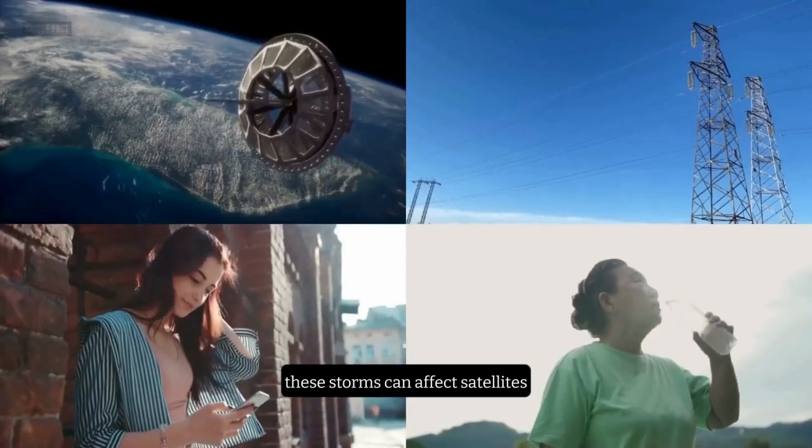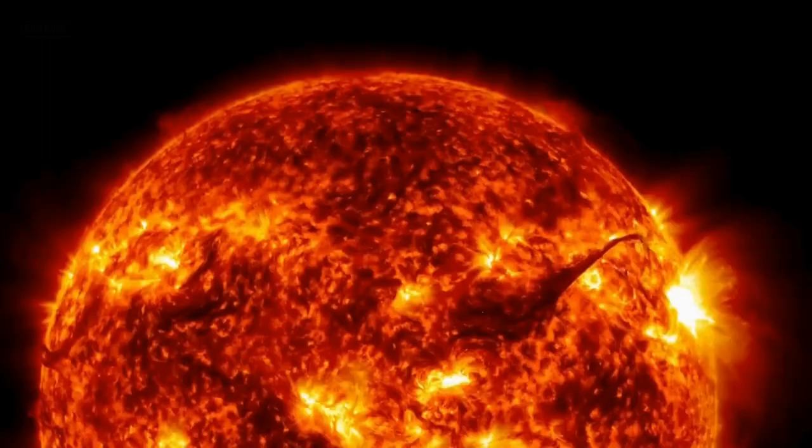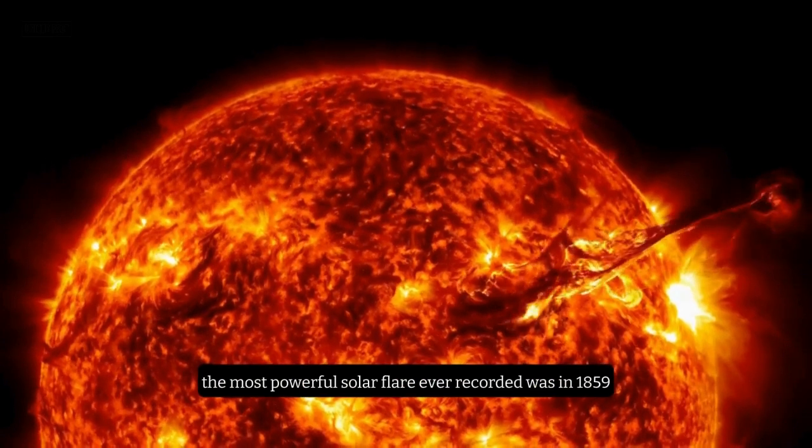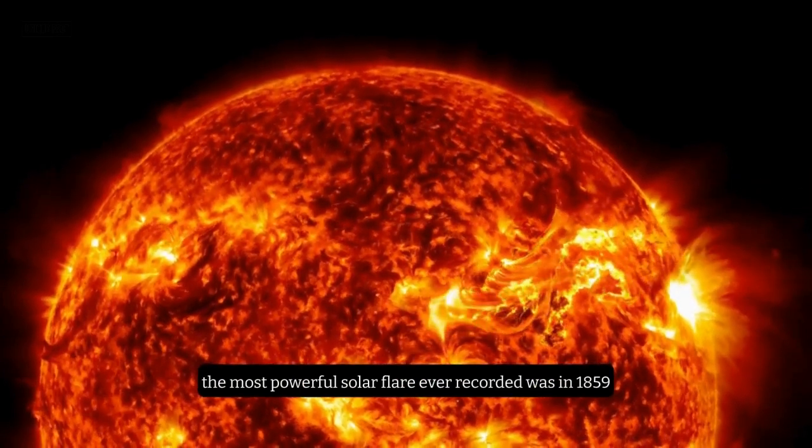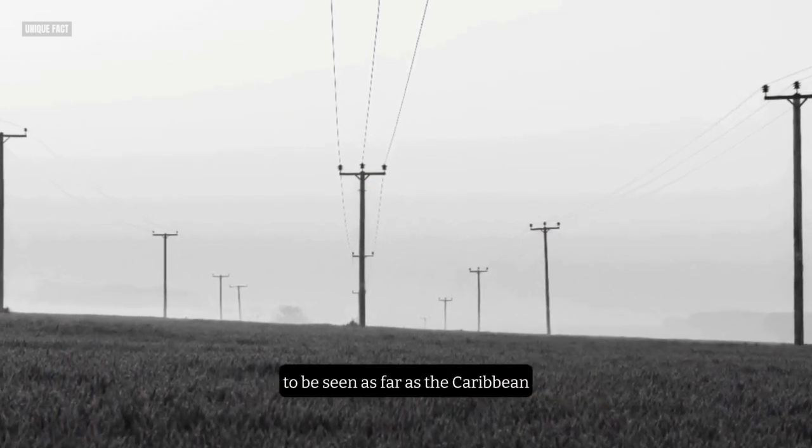These storms can affect satellites, power grids, communication systems, and even human health. The most powerful solar flare ever recorded was in 1859, known as the Carrington event, which caused telegraph wires to spark and auroras to be seen as far as the Caribbean.